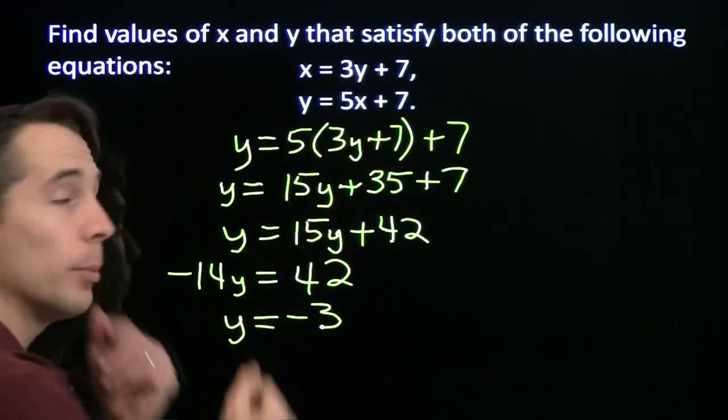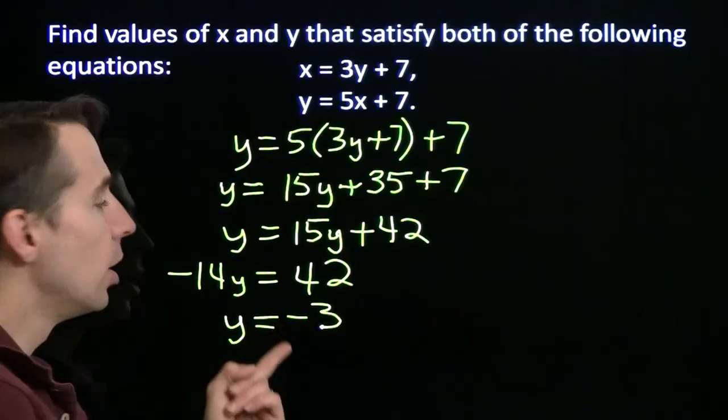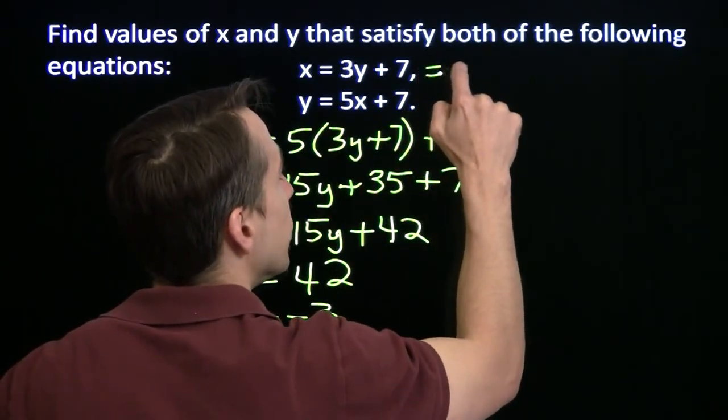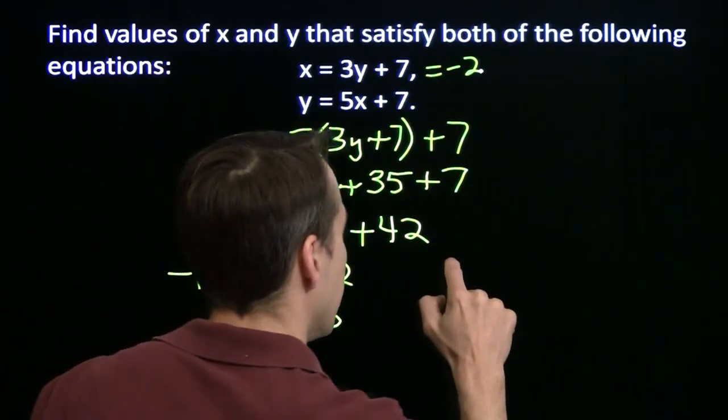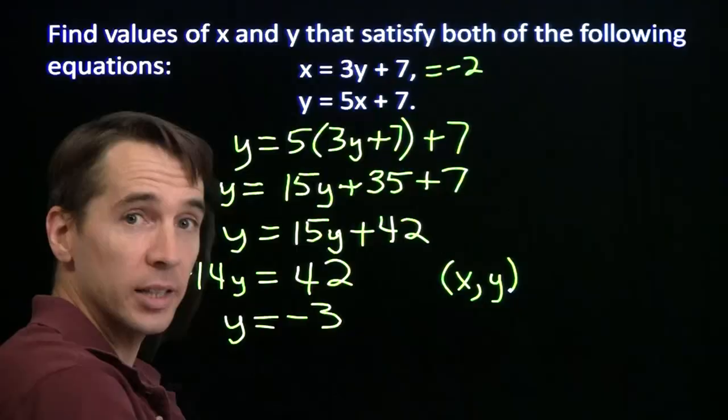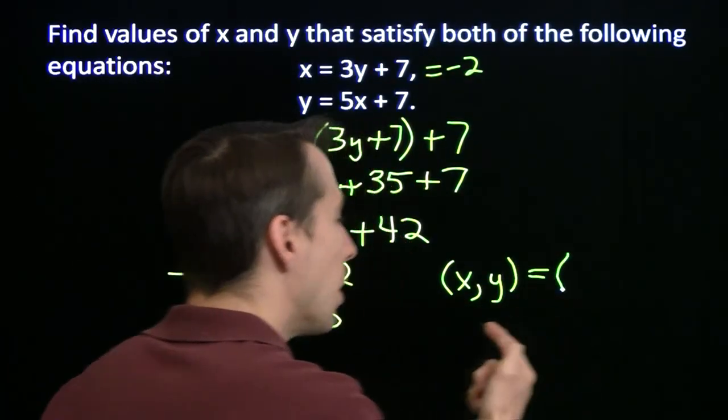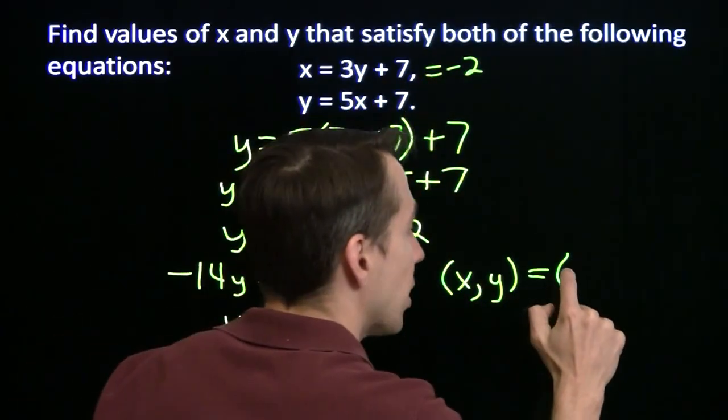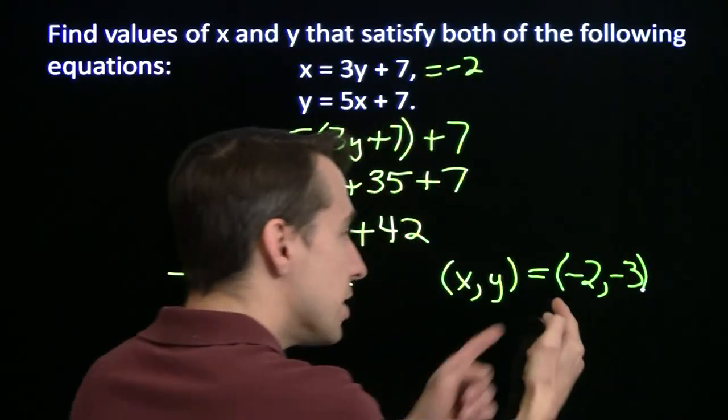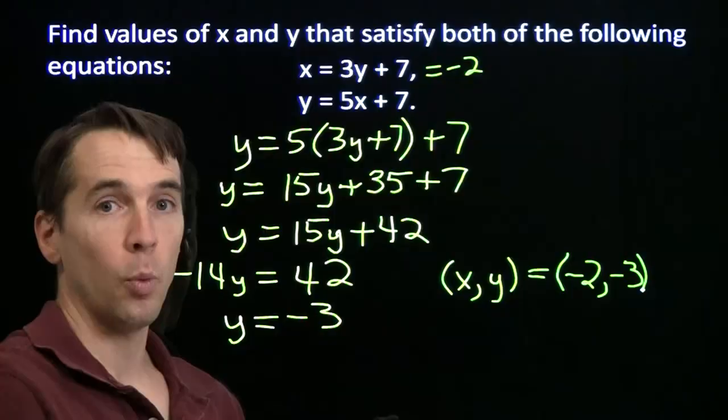And now we can come back up here and find out what x goes with this by just putting negative 3 in here for y. 3 times negative 3 is negative 9. Add the 7, you get negative 2. And the way we like to write this solution is we write x comma y inside the parentheses. We call this an ordered pair. The order is very important because we're going to match that order over here. We're going to say x comma y is negative 2 comma negative 3. And these numbers go in the same order as these variables. The negative 2 goes with x. Negative 3 goes with y.